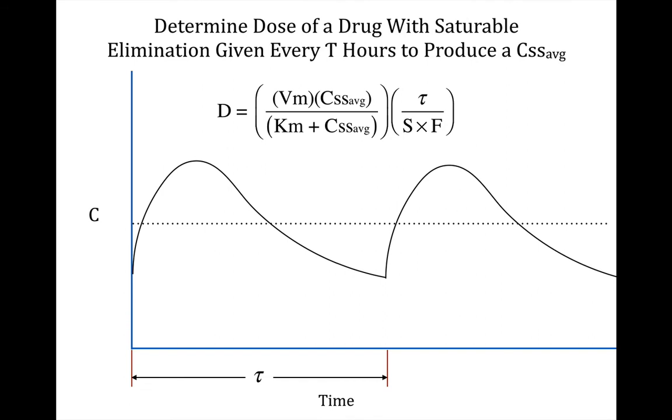What we actually want to do is determine the dose of the drug, in this case a drug with saturable elimination, that's given every tau hours to produce a CSS average. After the equation is manipulated, it comes up to be this: the dose equals Vm, or maximum velocity of elimination, times the average steady-state concentration desired, divided by Km, which is the Michaelis-Menten constant, plus CSS average, multiplied by tau and divided by S times F.